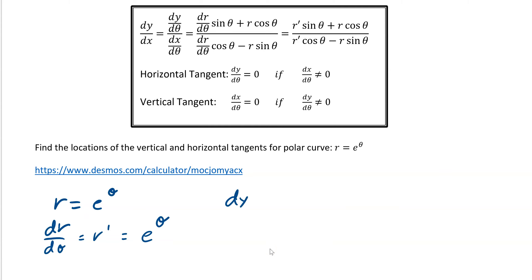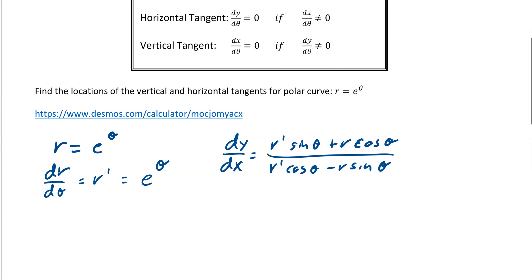So now we can plug that in. So dy/dx is equal to r' sin θ plus r cos θ, and then it's r' cos θ minus r sin θ. So we would end up with e^θ sin θ plus e^θ cos θ. We're just putting everything in terms of θ, which is our parameter.